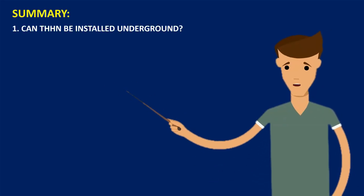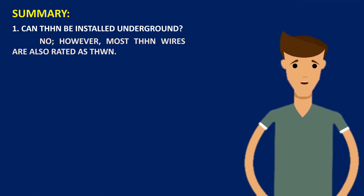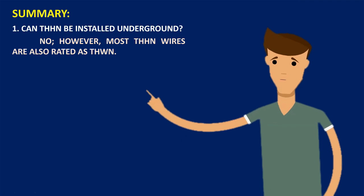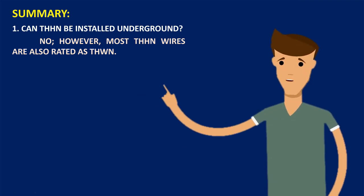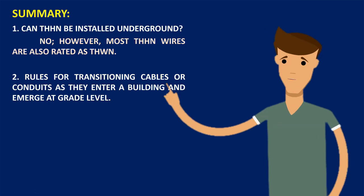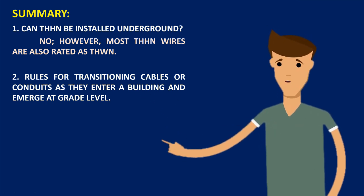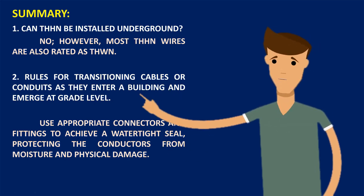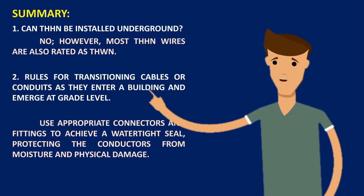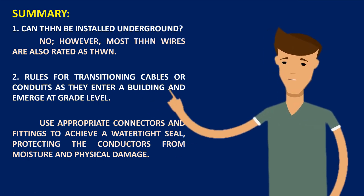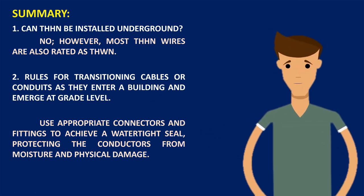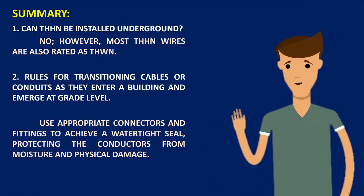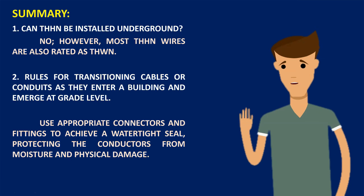Going back to our question: can THHN be installed underground? The answer is no; however, most THHN wires are also rated as THWN, so it's important to ensure that the wire is marked with the appropriate slash type. Additionally, we discussed the rules for transitioning cables or conduits as they enter a building and emerge at grade level. Use appropriate connectors and fittings to achieve a watertight seal, protecting the conductors from moisture and physical damage. When installing wires underground, consider using conduits for added protection against physical hazards and environmental factors. Thank you for participating in this important discussion, and let's continue to prioritize safety in all our electrical projects.